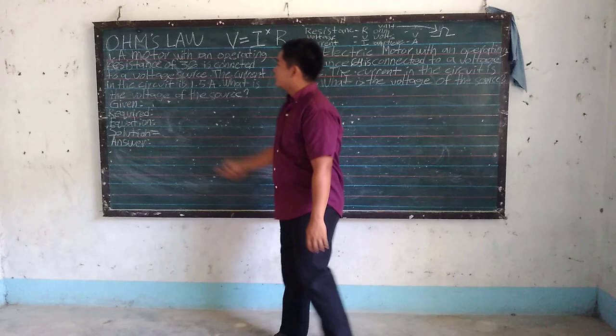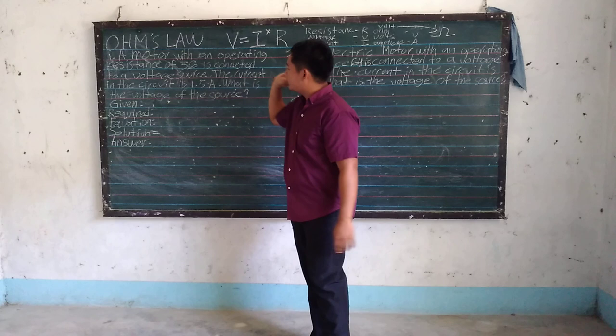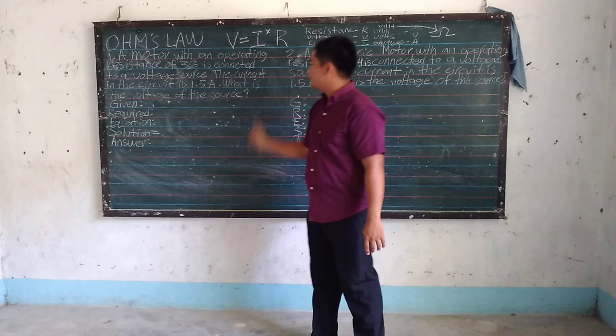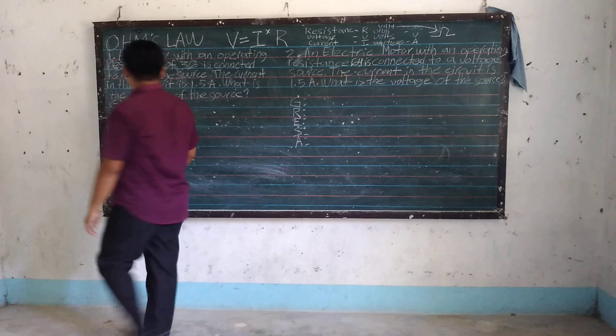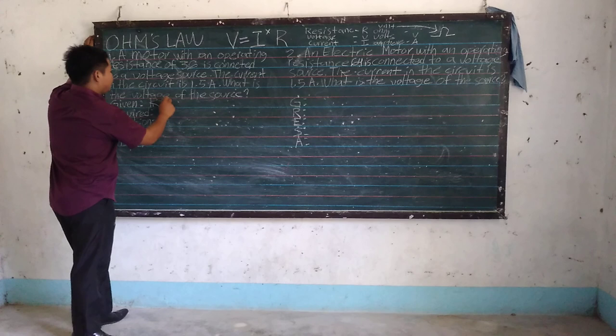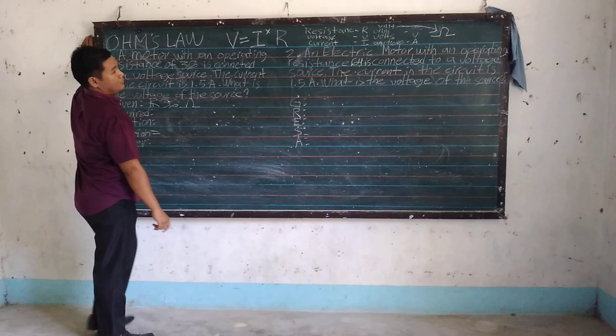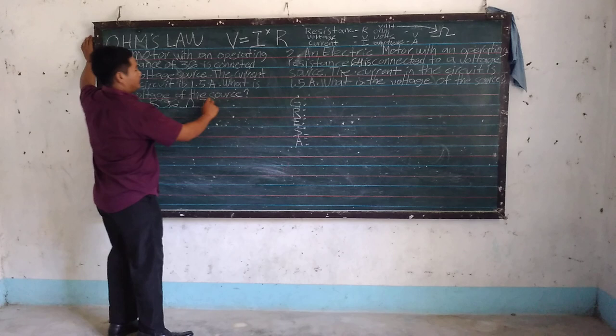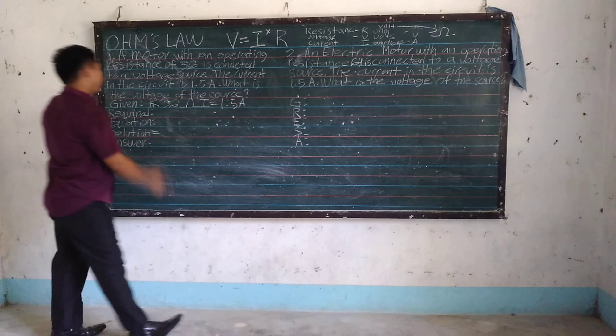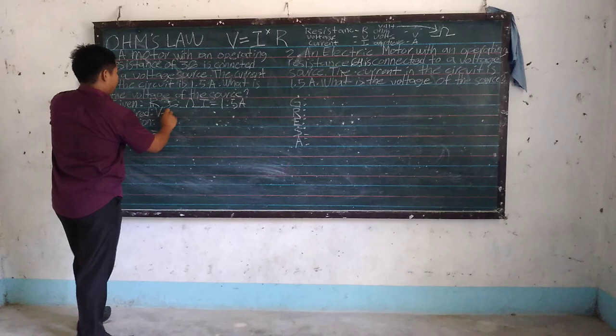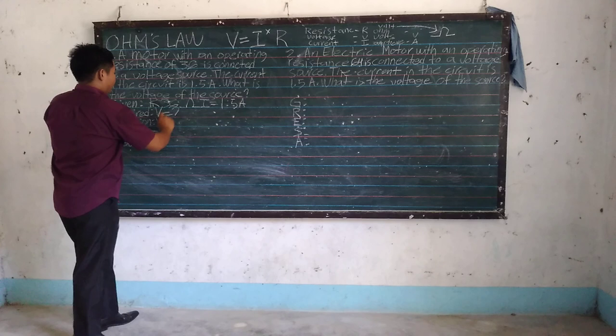A motor with an operating resistance of 36 ohms is connected to a voltage source. The current in the circuit is 1.5 amperes. The question is: what is the voltage of the source? So the given would be the resistance, which is 36 ohms, and the current would be I equals 1.5 amperes. The required is the voltage, V equals question mark. The equation would be V equals I times R.